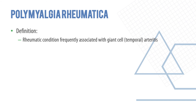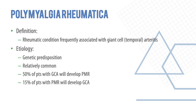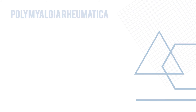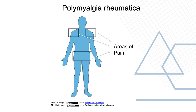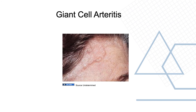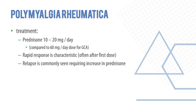Polymyalgia rheumatica is a rheumatic condition associated with giant cell arteritis. About 50% of patients with giant cell arteritis will develop polymyalgia rheumatica; 15% will develop giant cell arteritis. Clinical presentation is usually in people age 40 or more, with bilateral aching and morning stiffness lasting 30 minutes or more for one month, involving at least two to three areas: neck, shoulders, proximal arms, hips, and proximal thighs. ESR is typically 40 mm/hr or greater. Treatment involves prednisolone 10–20 mg per day; rapid response is characteristic, often after the first dose, though relapse is common, requiring increased prednisolone.